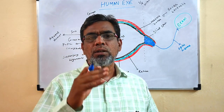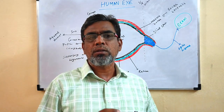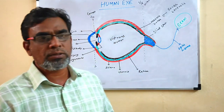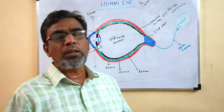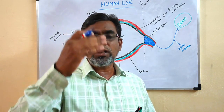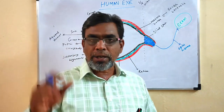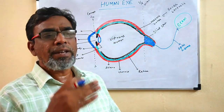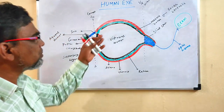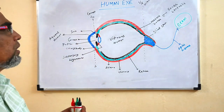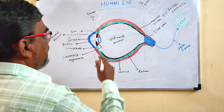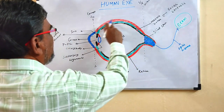The eyeball is covered by three important layers. These layers are called sclera, choroid, and retina. These three layers cover the eyeball. We will see the various features and structures of the eye in detail from this diagram.